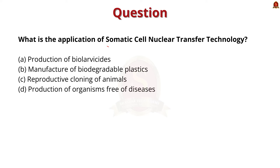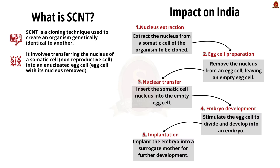Look at this next question: what is the application of somatic cell nuclear transfer technology? The correct answer is option C — reproductive cloning of animals. Somatic cell nuclear transfer is a cloning technique used to create an organism that is genetically identical to another. The process involves transferring the nucleus of a somatic cell, that is a non-reproductive cell, into an egg cell that has had its nucleus removed. Firstly, a nucleus is extracted from a somatic cell.